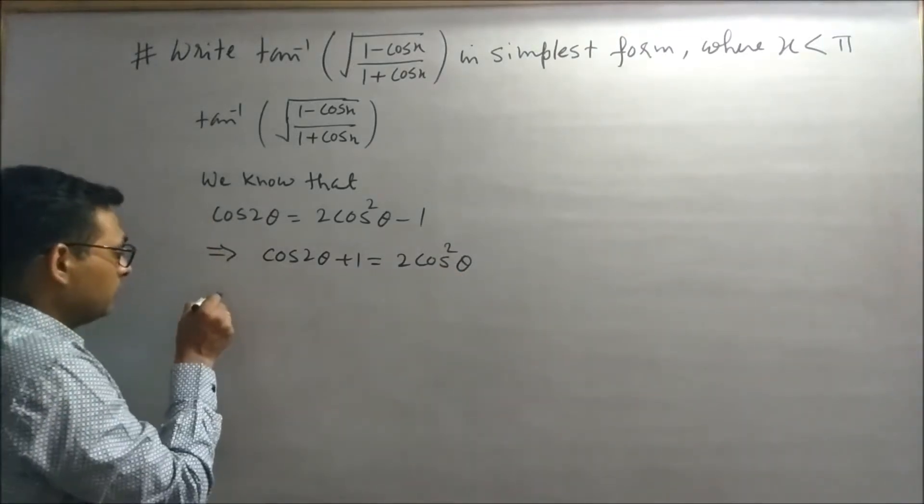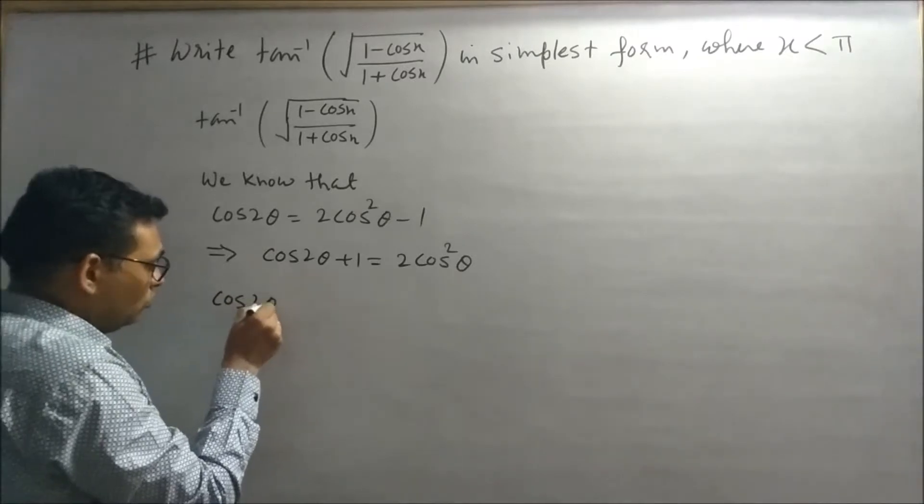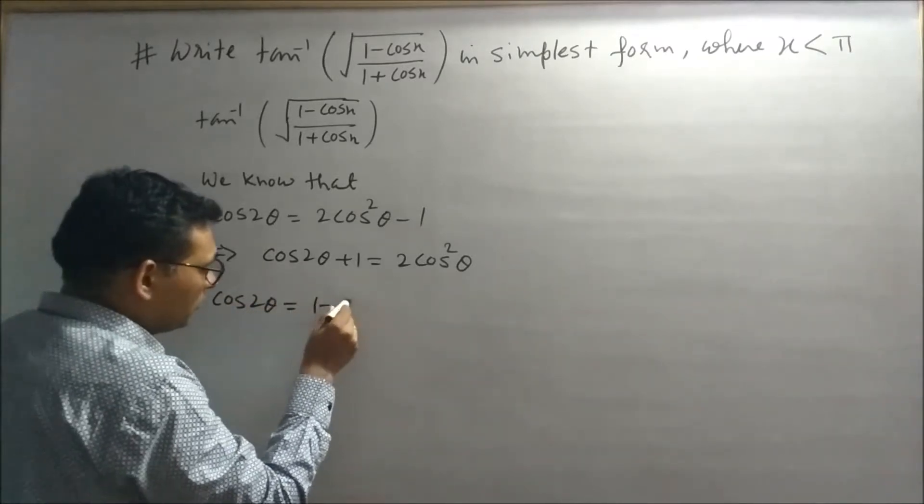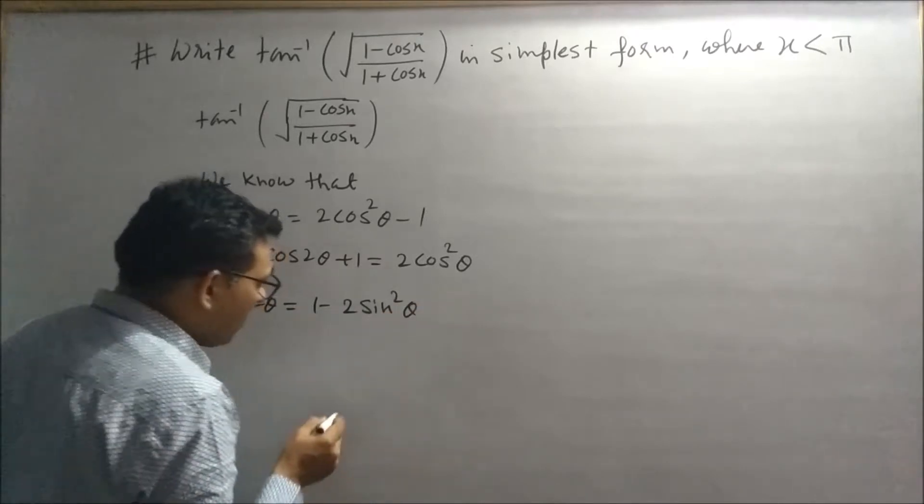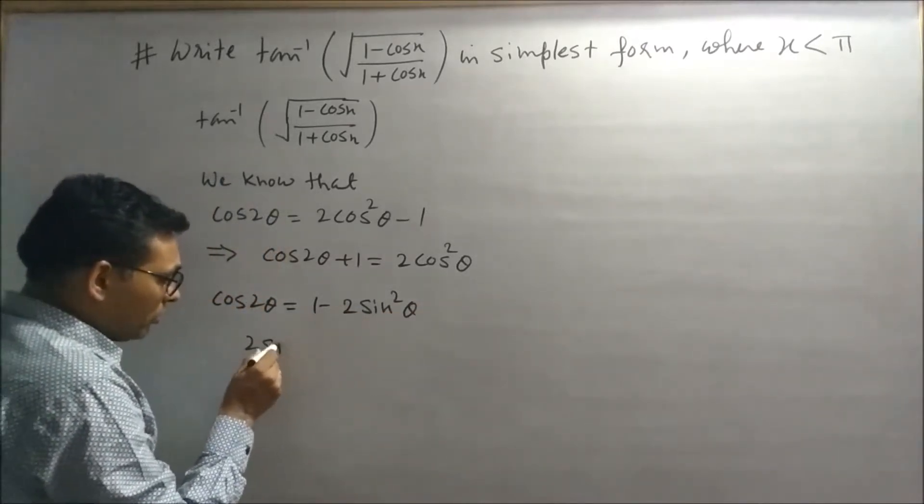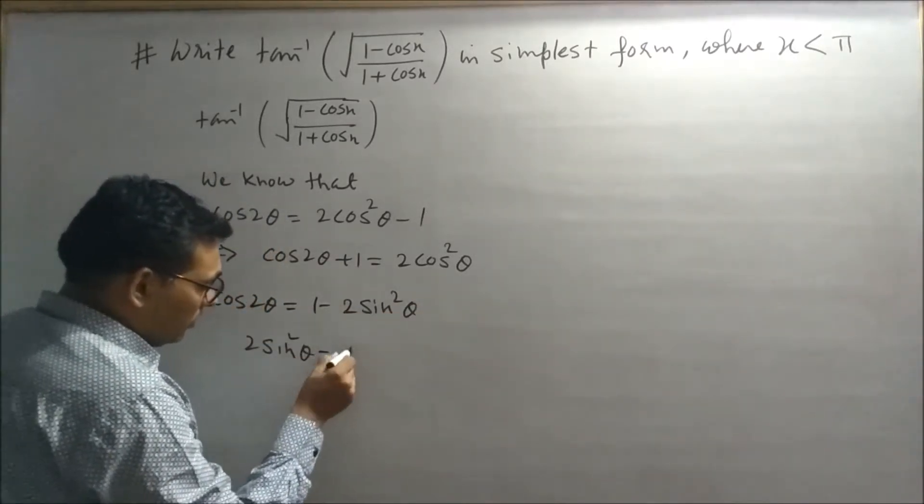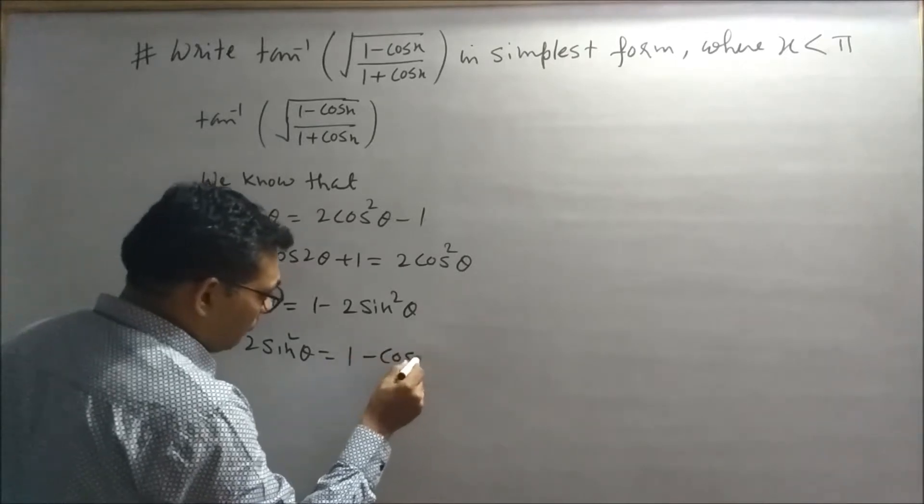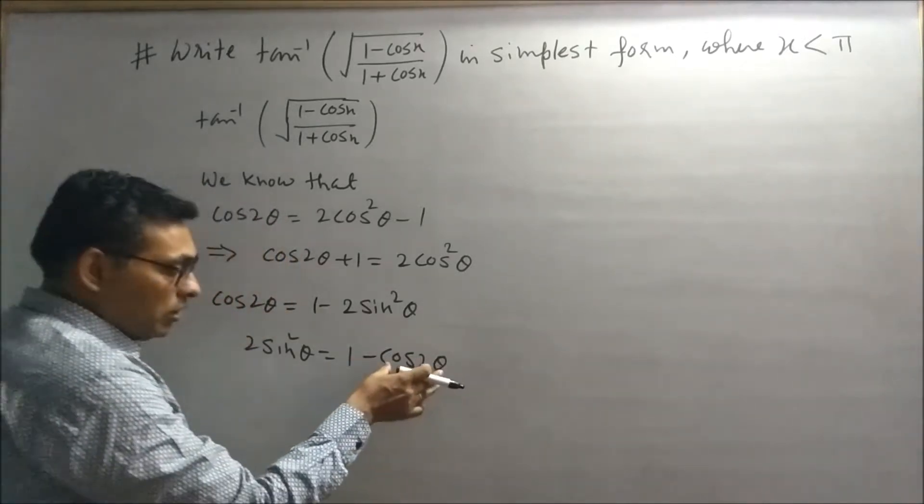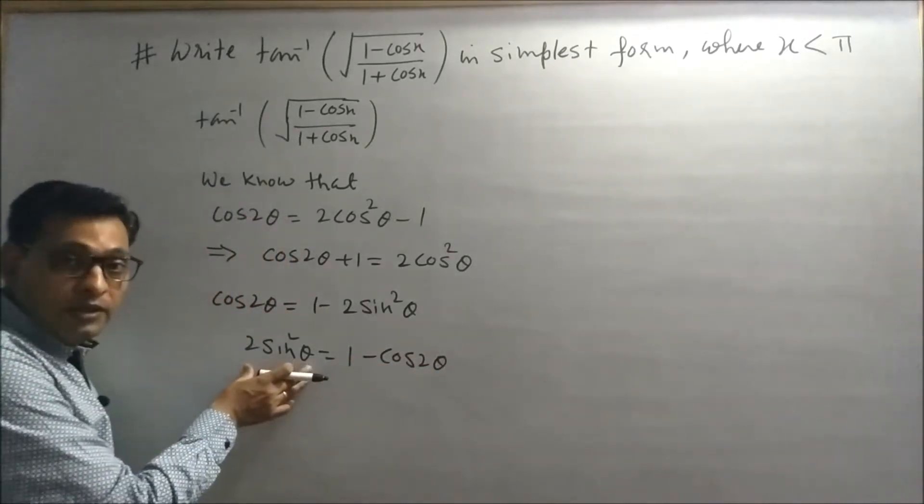Similarly, cos 2θ is also equal to 1 minus 2 sin² θ. So 2 sin² θ will equal to 1 minus cos 2θ, meaning cos 2θ becomes half angle in sin form.